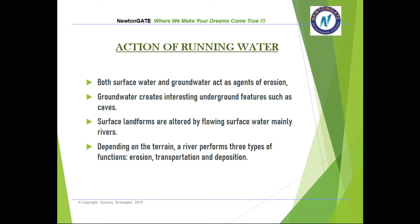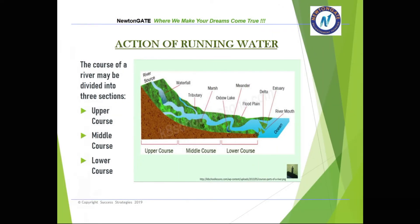Depending on the terrain, a river performs three types of functions: erosion, transportation, and deposition. The course of a river may be divided into three sections — the upper course, middle course, and lower course. In today's video, we are going to discuss only the upper course; the middle course and lower course will be discussed in the upcoming video.